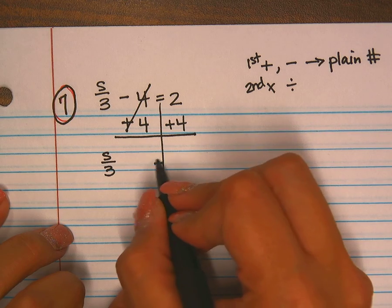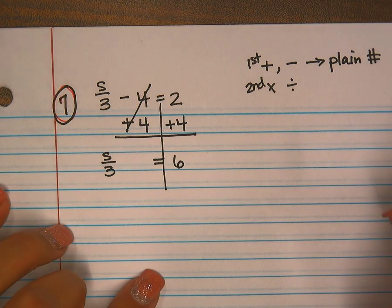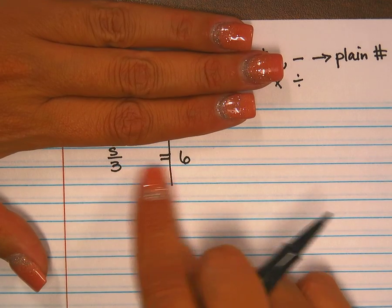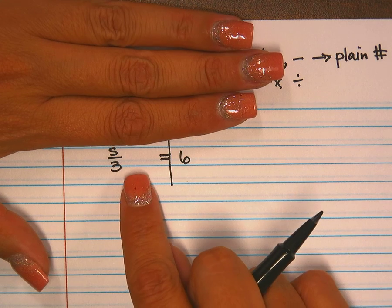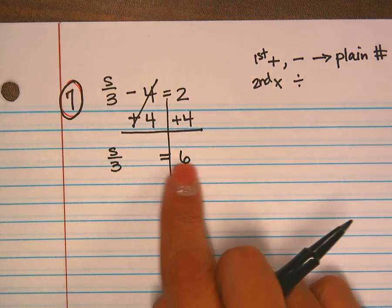Bring down to this next line: s divided by three, my equal sign, and then four plus two is six. Now I have basically one more step left. This would be considered a one-step equation: s divided by three equals six.